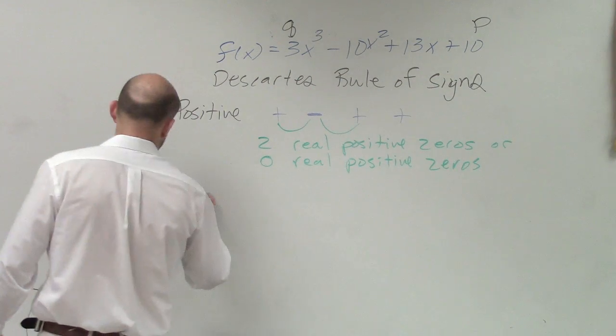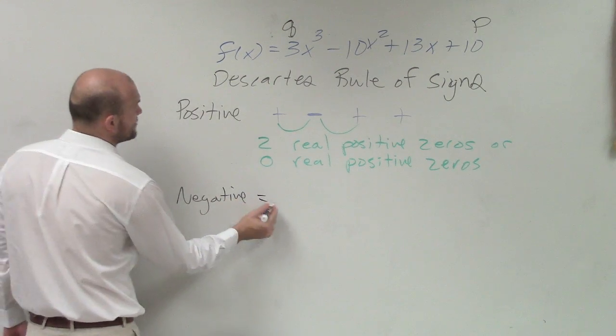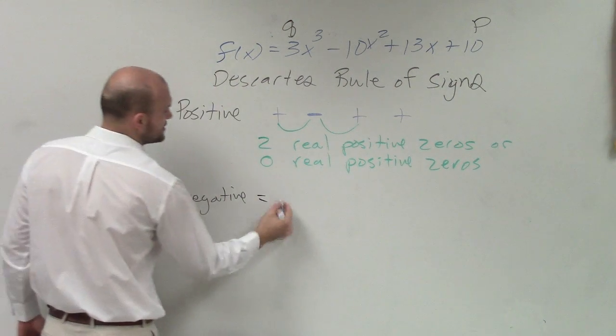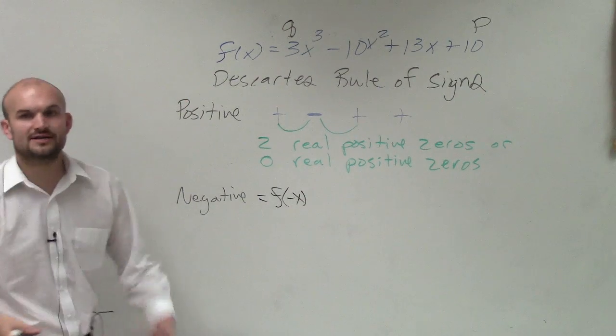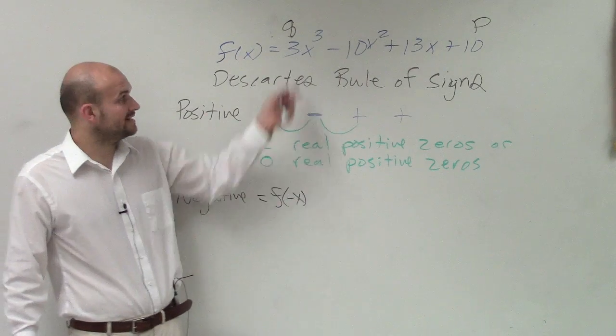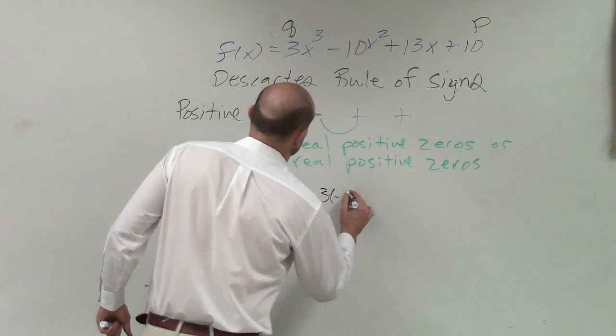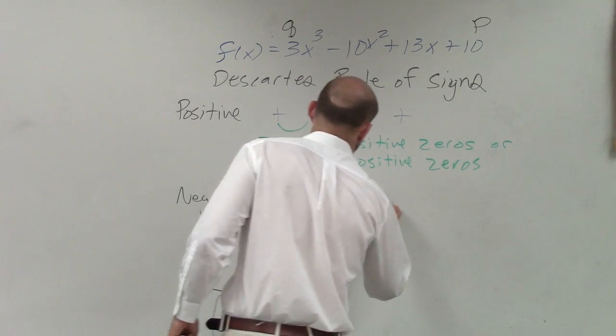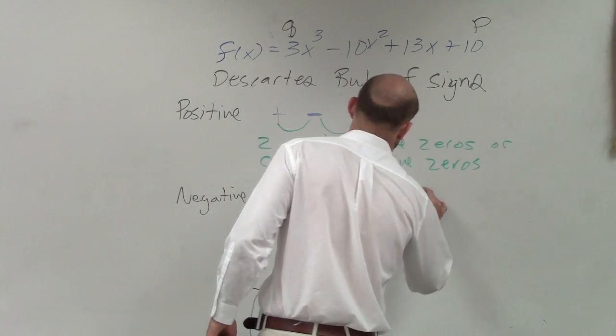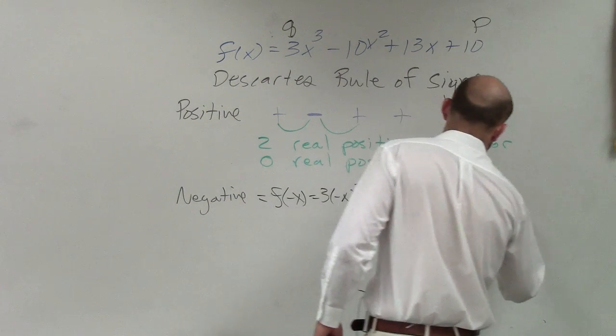To determine the negative, we have to do a little bit of mathematics. Rather than dealing with f(x), we're now going to deal with f(-x). If you remember from functions, if I have f(-x), I'm going to plug in negative x for my function. So this will be 3(-x)³ - 10(-x)² + 13(-x) + 10.